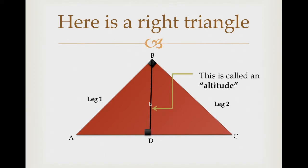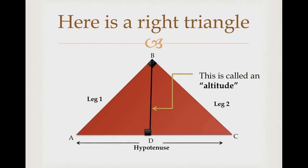This line that I've added here is called an altitude. How do you know that it's an altitude? First, it's a right triangle, and second, this line here is perpendicular to the hypotenuse. So we call this an altitude — you could also call this the height, but for the sake of this chapter, we'll call it altitude. And don't forget that this here is the hypotenuse.